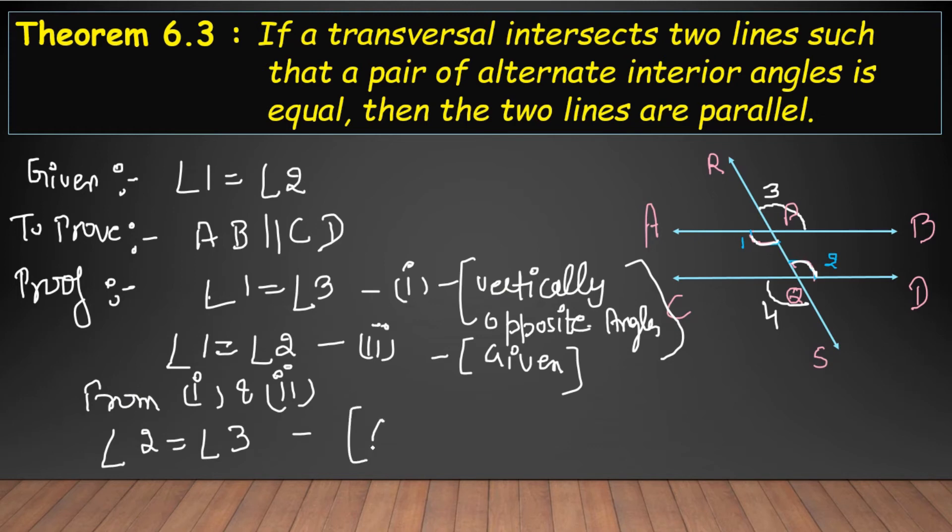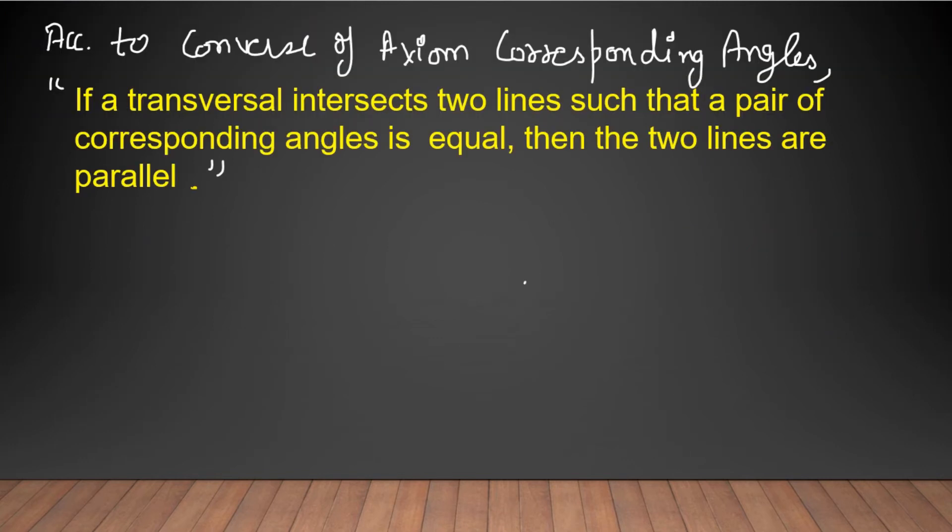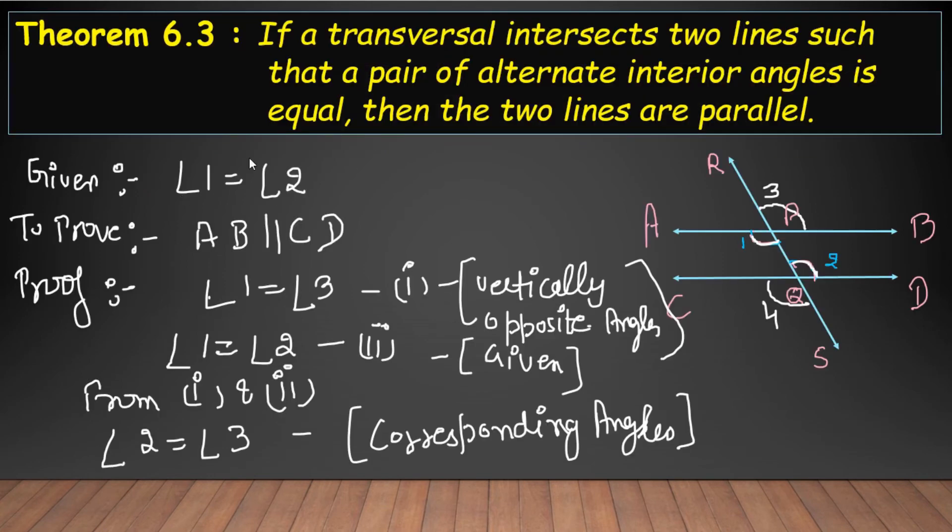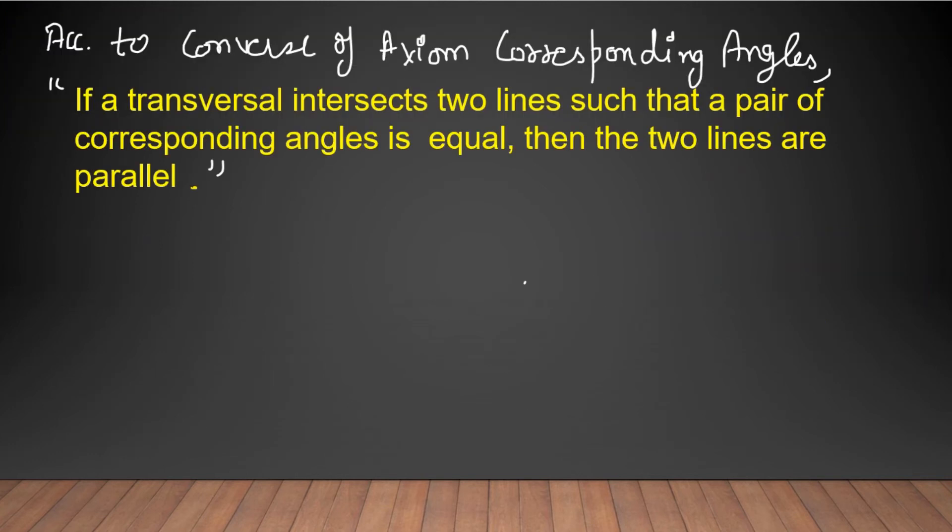What are corresponding angles? In the first video, we had the axiom of corresponding angles and the converse of the axiom. Converse means reverse. The converse states: if a transversal intersects two lines such that a pair of corresponding angles is equal, then the two lines are parallel. The axiom says if two parallel lines are intersected by a transversal, then the corresponding angles are equal.